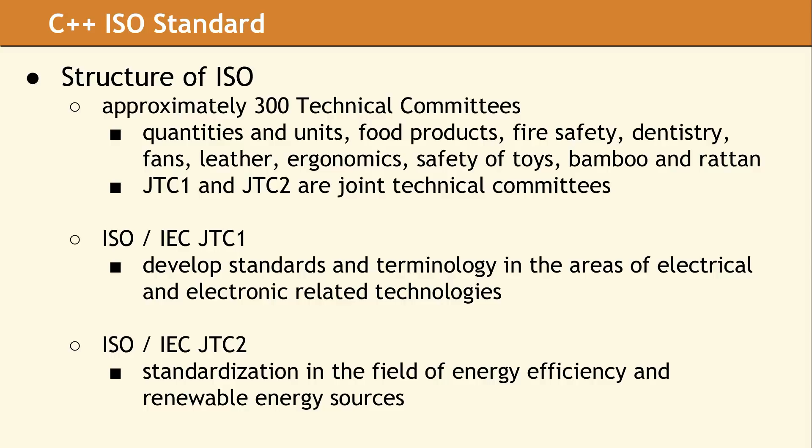There are also two joint committees, which report to both ISO and IEC, which is the International Electrotechnical Commission. The joint committees are called JTC1 and JTC2, where the J stands for joint. JTC1 is in charge of electronic standards, while JTC2 deals with renewable energy.